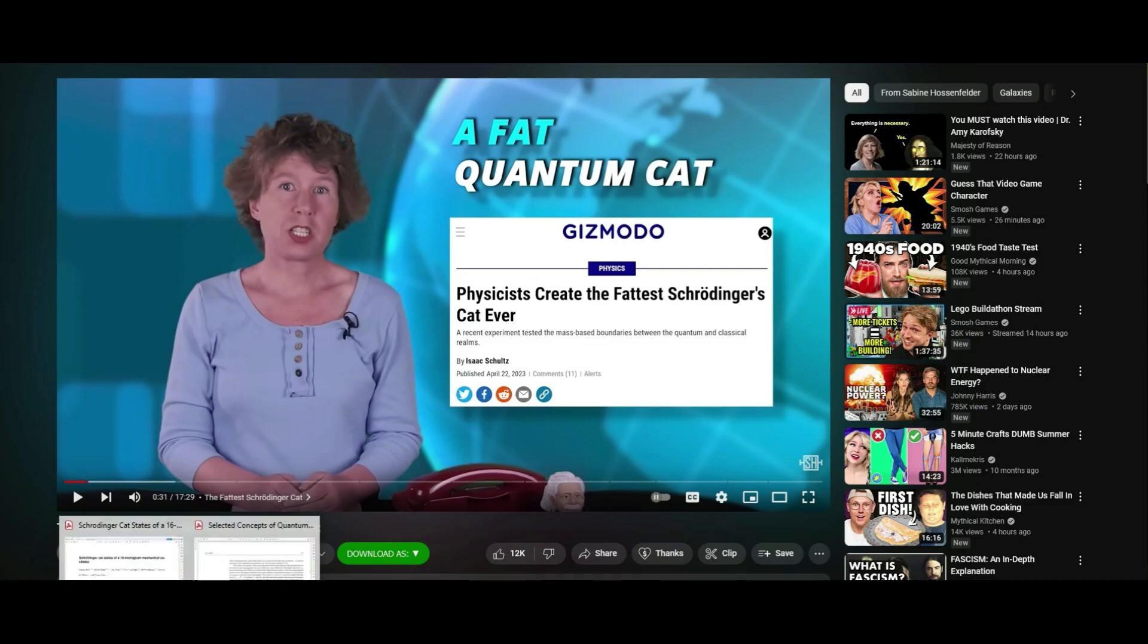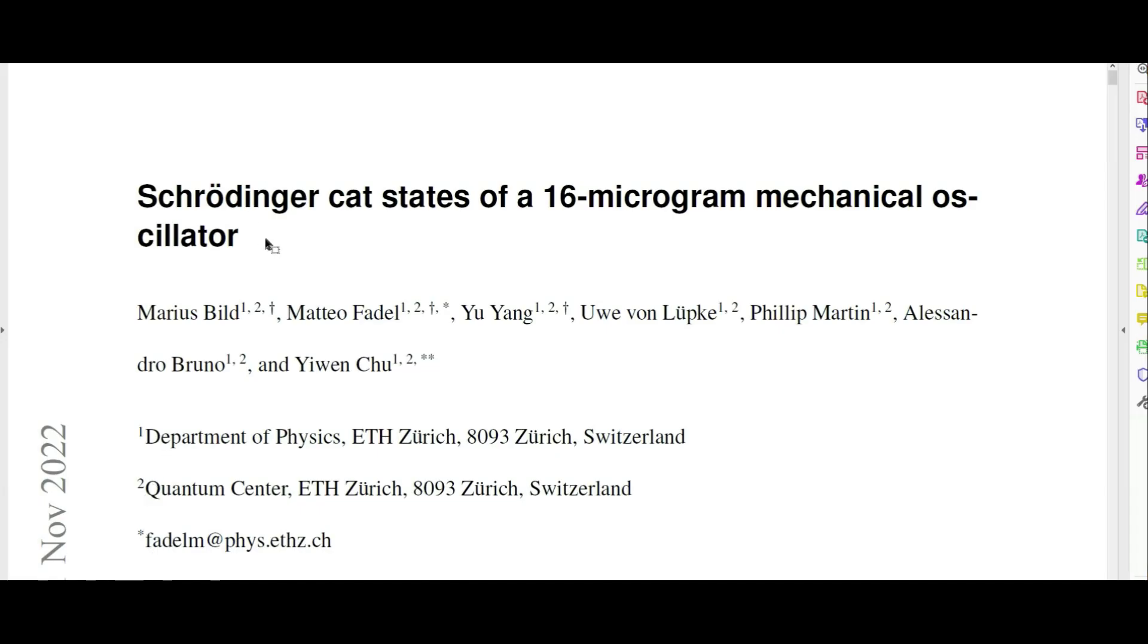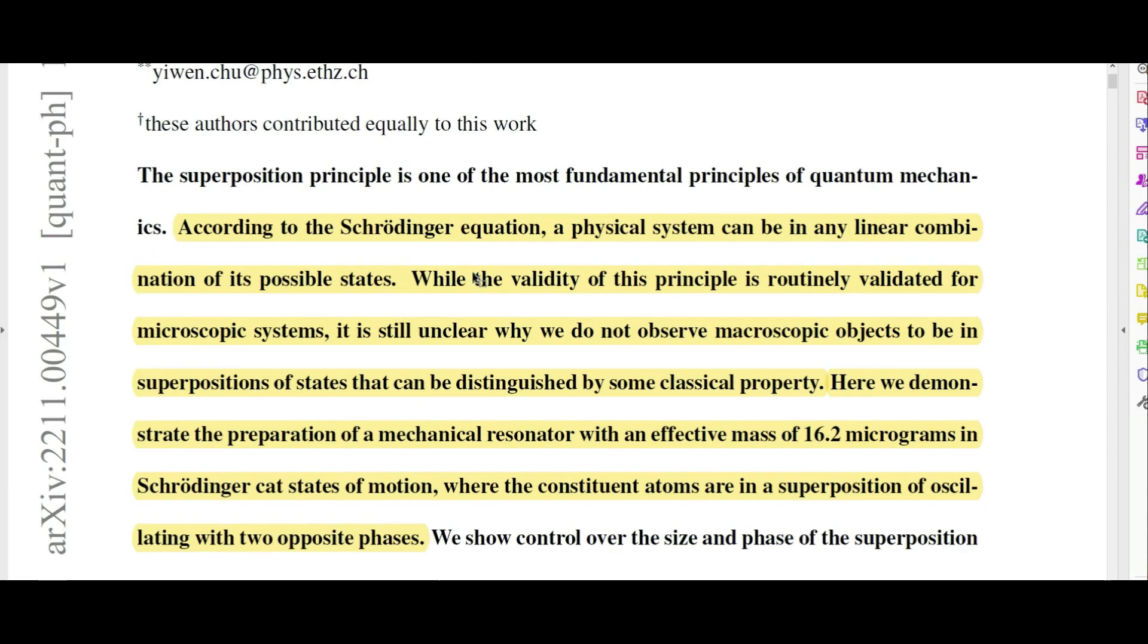They essentially try to get a superposition state in something that is more macroscopic. It's 16 micrograms, which seems pretty small, but it's on the order of 10 to the power of 17 atoms. They were able to, with some caveats, get what they call a Schrödinger cat state, which is a macroscopic object in a superposition of two states. I'm not going to discuss all of this paper because it's extremely technical, but I'm going to discuss a little bit of it.